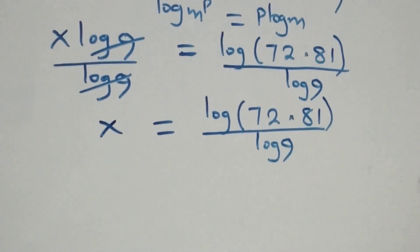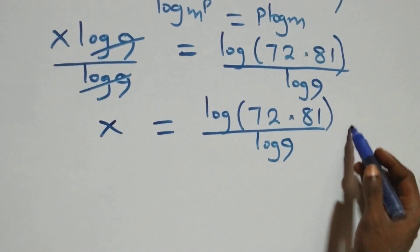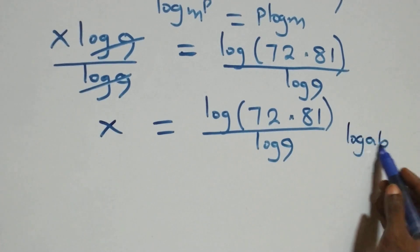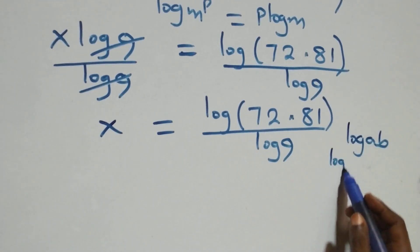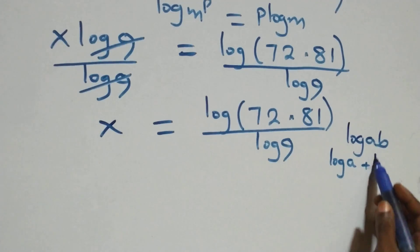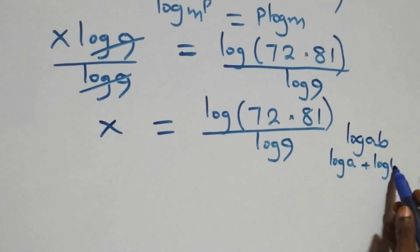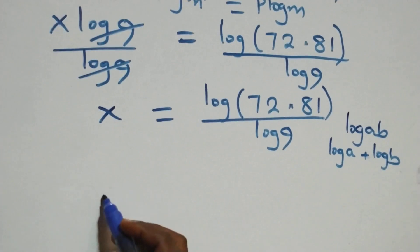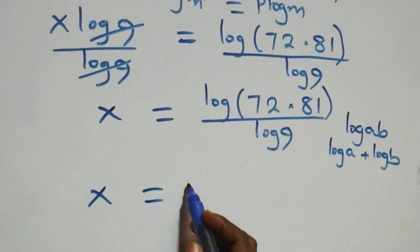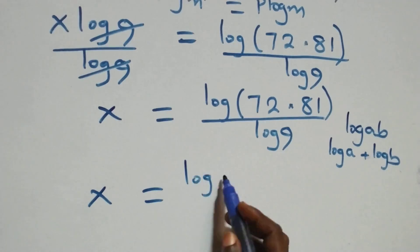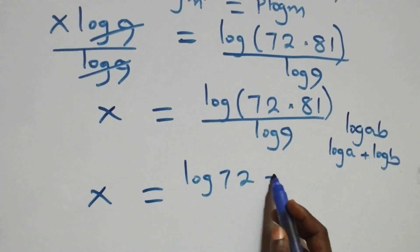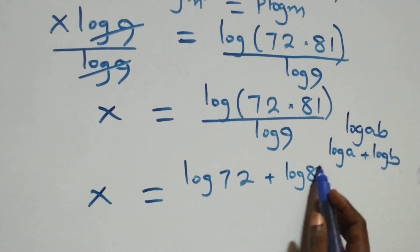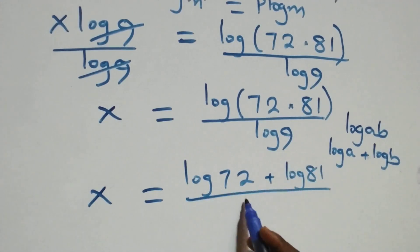This follows from the law of logarithm: when we have log a times b, this is the same as log a plus log b. So this becomes x equals log 72 plus log 81 over log nine.